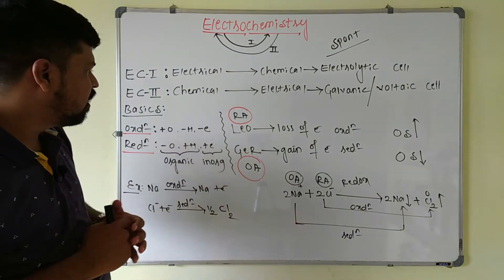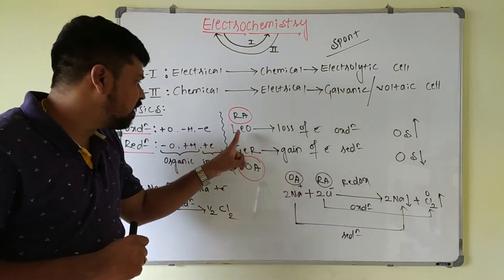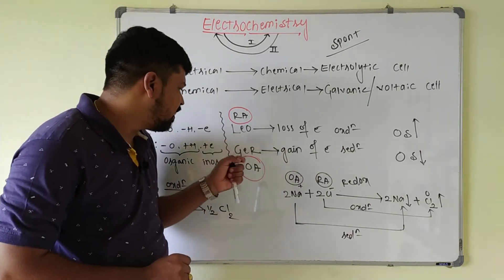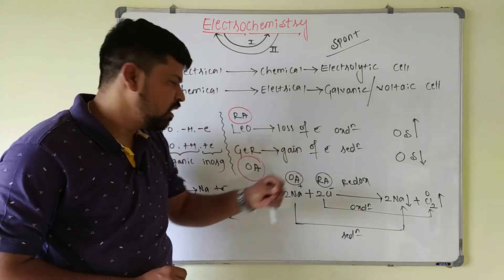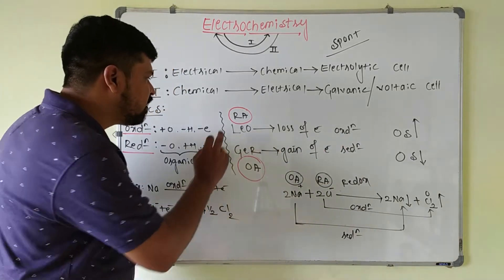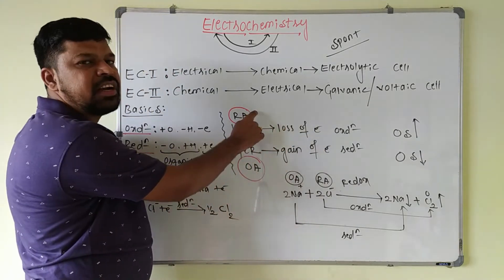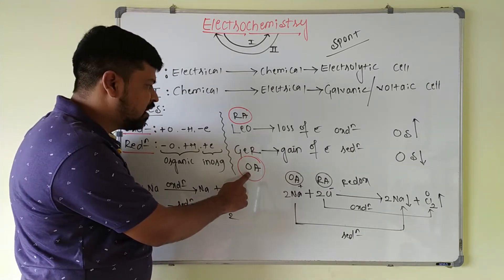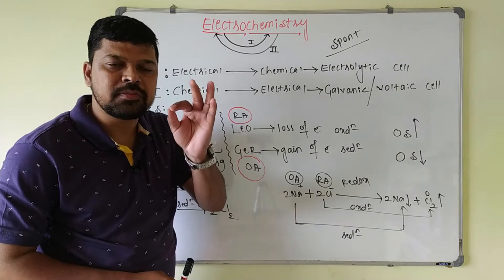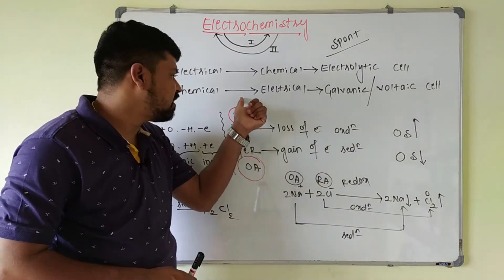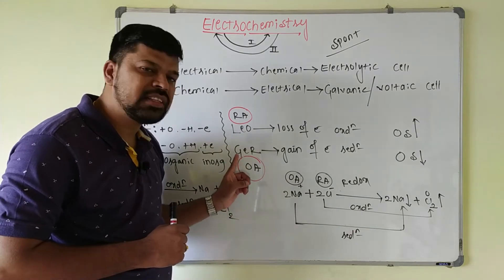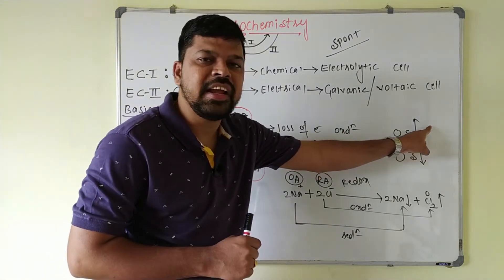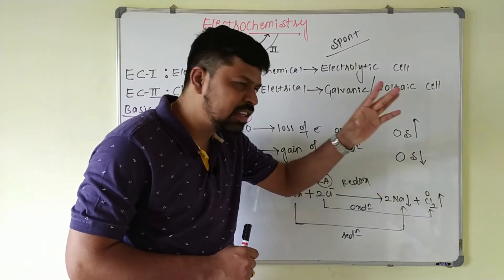Remember the trick: LEO GER — Loss of Electron is Oxidation, Gain of Electron is Reduction. The species undergoing oxidation acts as the reducing agent, and the species undergoing reduction acts as the oxidizing agent. In oxidation, oxidation state increases; in reduction, oxidation state decreases. For example, sodium metal (Na) loses an electron to become Na⁺ — oxidation state goes from 0 to +1, so oxidation state increases.